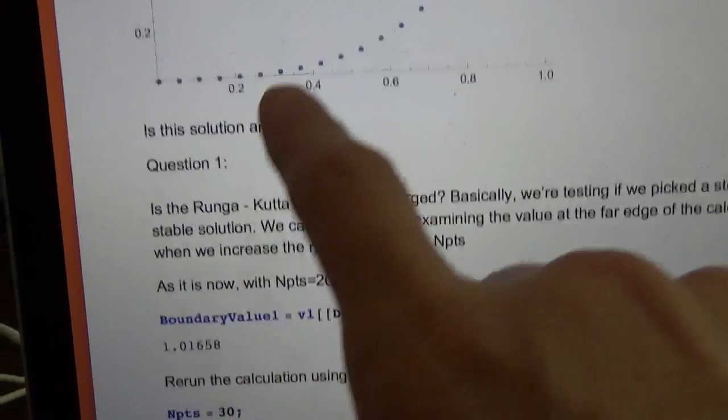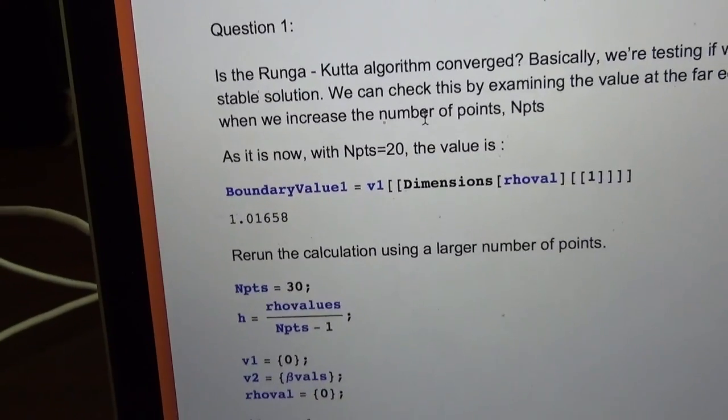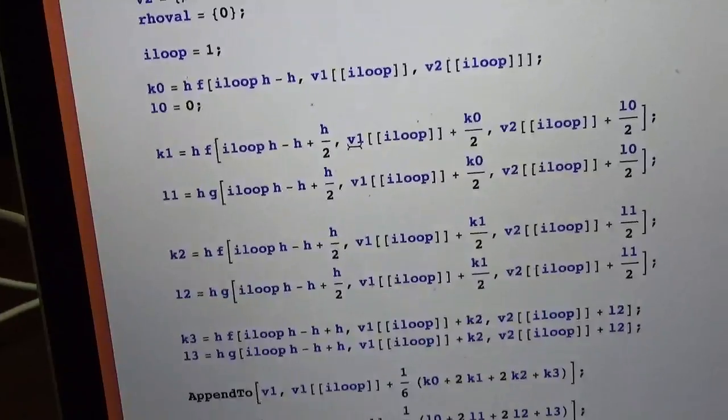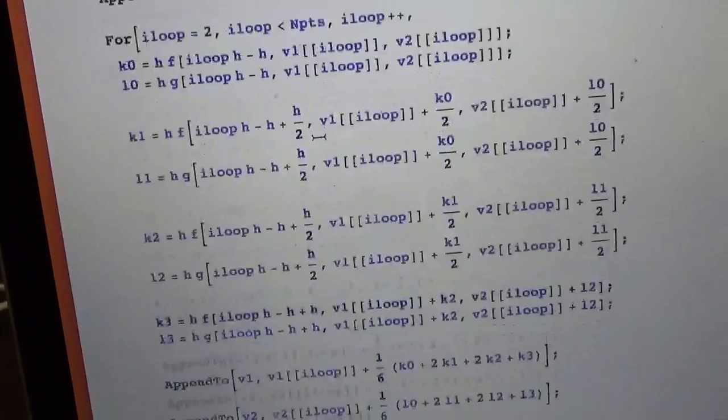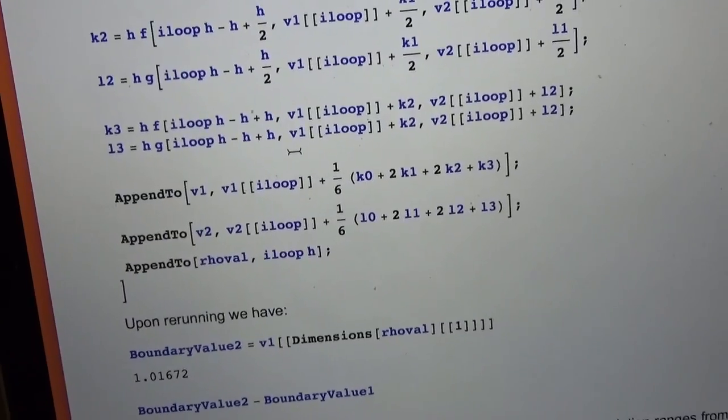We were using 20 points, so now let's try 30 points. Basically, we're going to step through the whole problem again one more time, this time using 30 points. It takes now three seconds instead of two to finish.